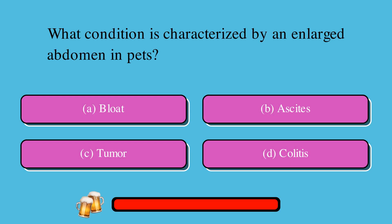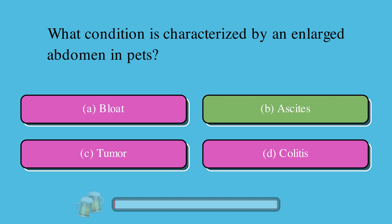What condition is characterized by an enlarged abdomen in pets? A. Bloat, B. Ascites, C. Tumor, or D. Colitis. The correct answer is B. Ascites.